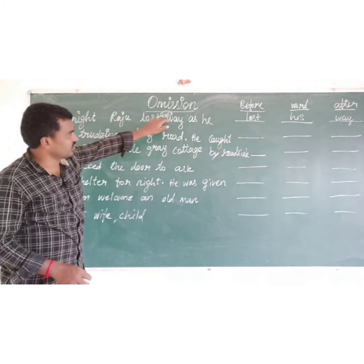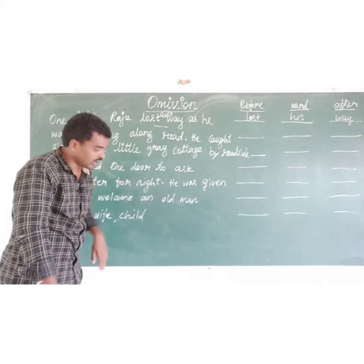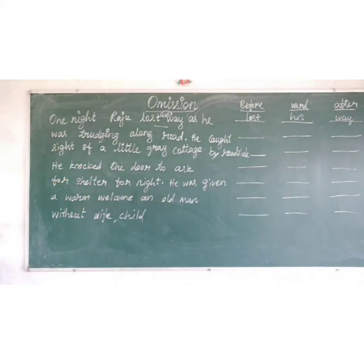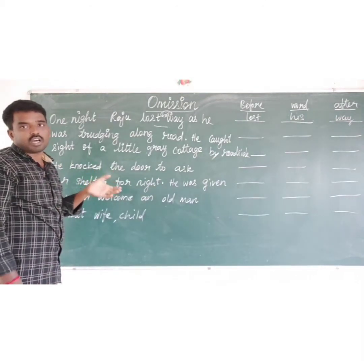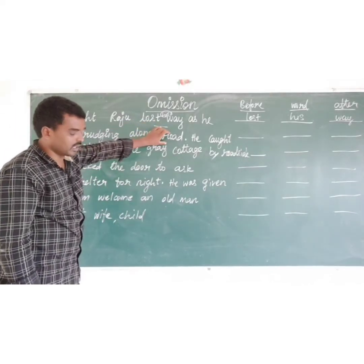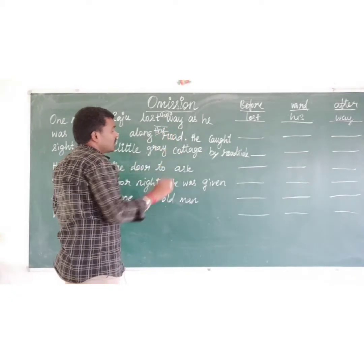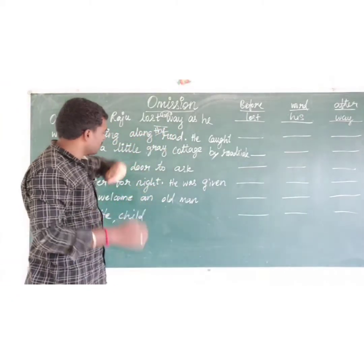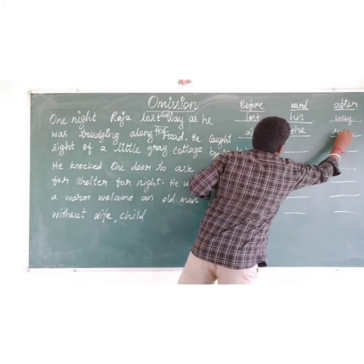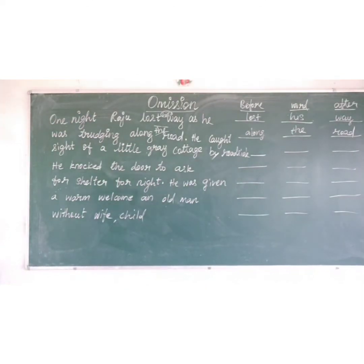Next, second line: 'He was trudging along road.' Along road, or along the road? If we are referring to a particular road, we use the definite article 'the'. So the missing word is 'the'. Before word: 'along'. After word: 'road'. We have completed two lines.